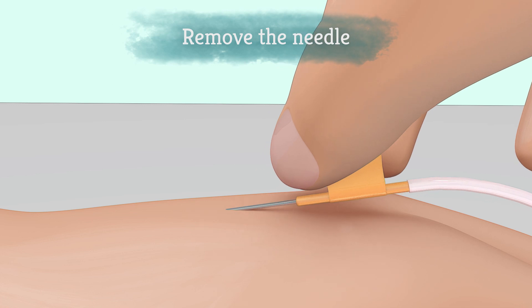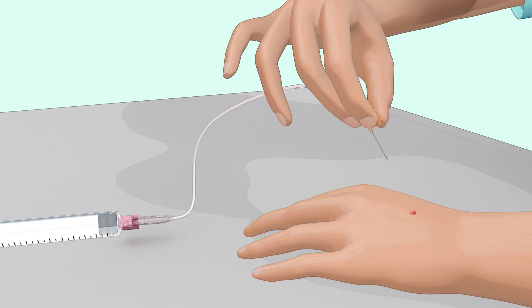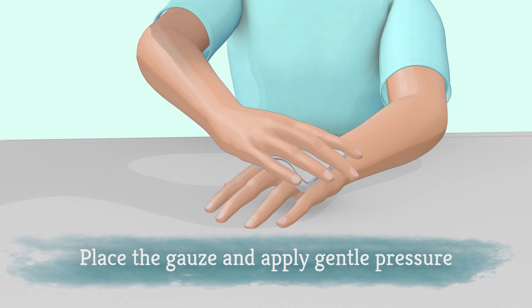When the syringe is empty, remove the needle at the same angle at which you inserted it, and place a gauze pad over the infusion site. Apply gentle pressure over the infusion site for a few minutes or until the bleeding stops.